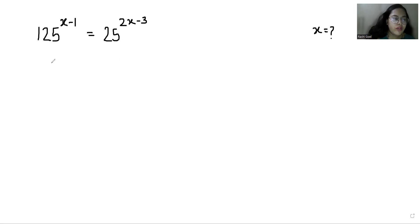So 125 we can write as 5 cubed, whole power x minus 1, equals similarly 25 as 5 squared, 2x minus 3. Now we know that if the bases are equal, their powers are also equal.